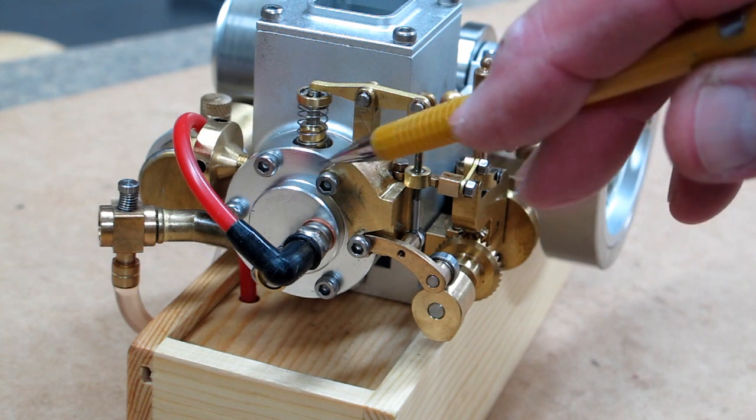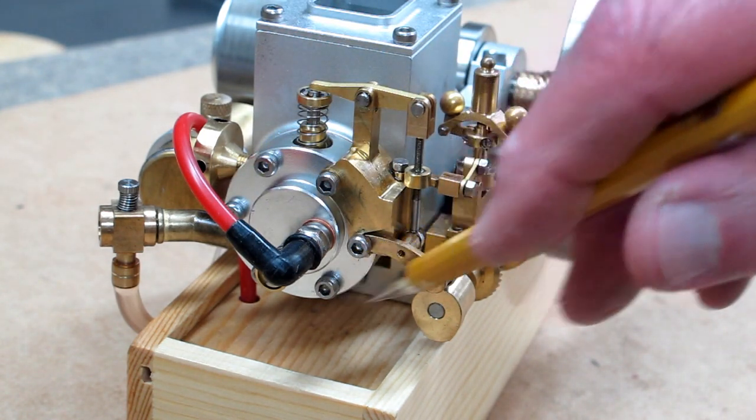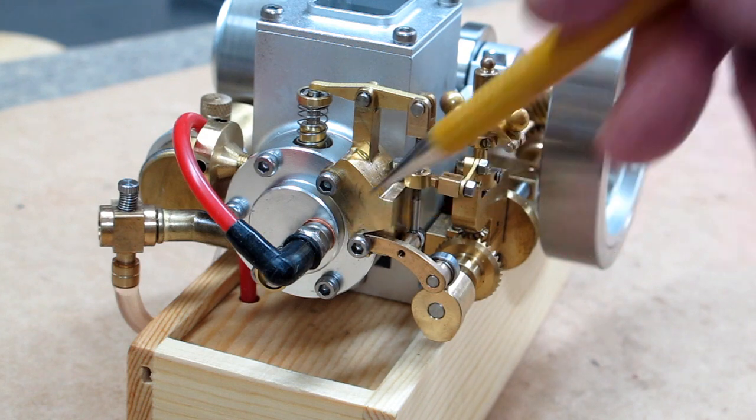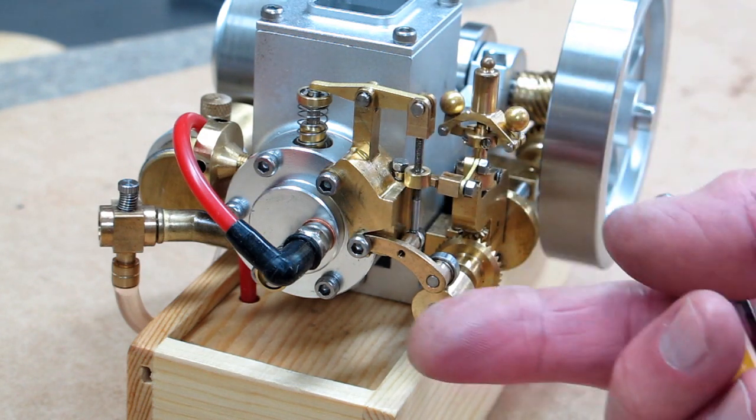When you put this back together, don't tighten these real tight. You just want them snug. And this one has to remain a little bit loose because this pivots on that bolt.